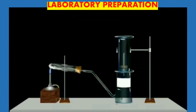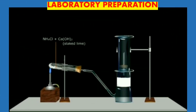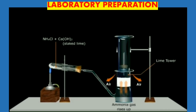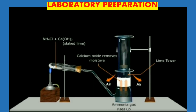Now let us understand the entire procedure with the help of a video. Ammonium chloride and calcium hydroxide are heated in a test tube with a Bunsen burner. The ammonia gas produced passes through the delivery tube and enters the lime tower where extra moisture is captured and the gas is dried. After that the gas is collected by downward displacement of air in an inverted gas jar.